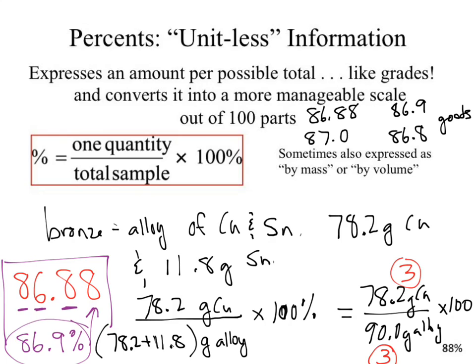Regarding the 100 we multiply by in percent calculations — how many sig figs does that 100 have? Infinite. Our 100 here is the total parts; it's a count. There are exactly 100 parts — not 101, not 99. If a number is exact, all digits are significant, and we have infinite trailing zeros. It is exactly at 100.